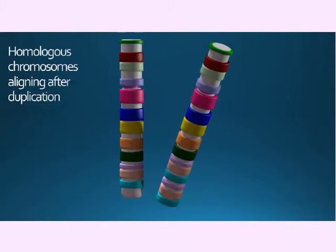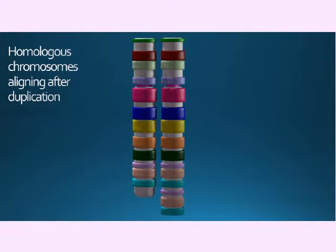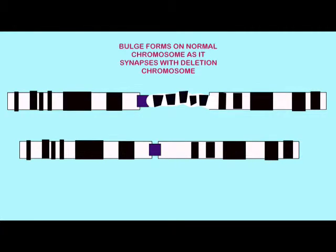If there is a duplication on a chromosome, there is now a section which does not correspond to another section on its homologous chromosome with which it synapses during meiosis. In both of these cases,